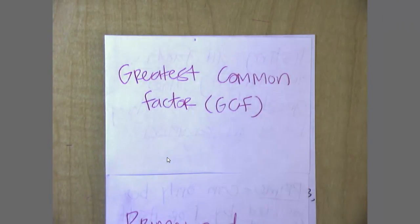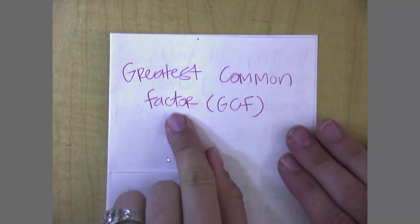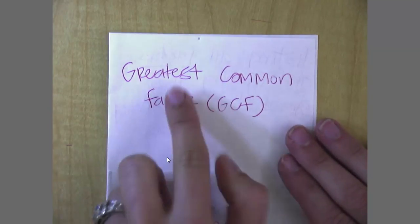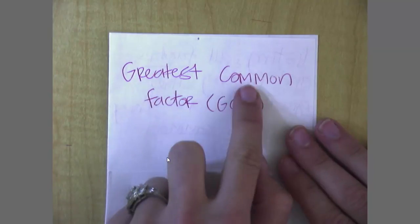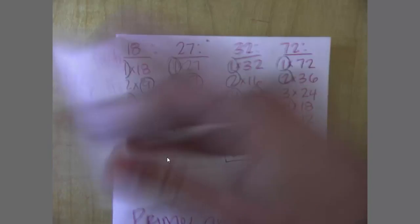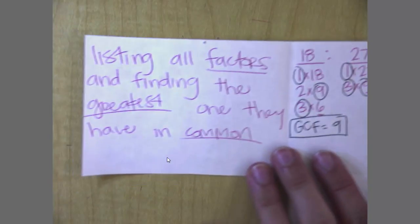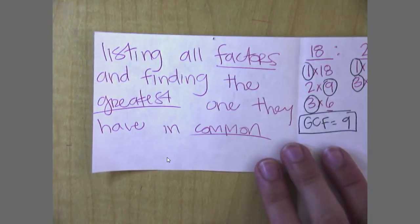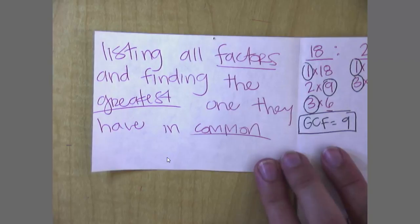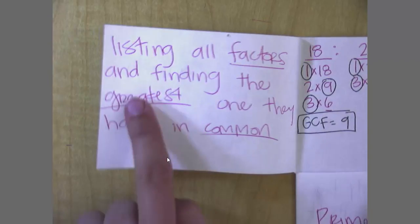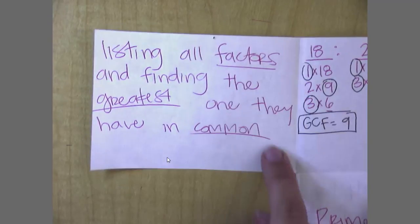We're looking at greatest common factor, also known as GCF. Greatest common factor is a great clue for you as to what you're actually doing in this problem. You are writing the factors and you're finding the largest one that some numbers have in common. So again, you're listing all the factors and finding the greatest one that they have in common. That's your greatest common factor or your GCF.